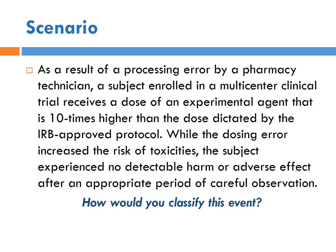Another scenario. As a result of a processing error by a pharmacy technician, a subject enrolled in a multicenter clinical trial receives a dose of an experimental drug 10 times higher than the IRB-approved protocol dictated. While the dosing error increased the risk of toxicity, the subject experienced no detectable harm after careful observation. This is another UPIRSO. It was unexpected — it was an error. It happened because the person was on a protocol, and it involved potential risk. We lucked out that this person was okay, but that was just an awful lot of luck.